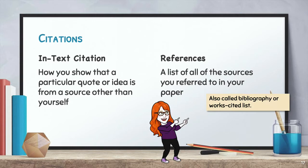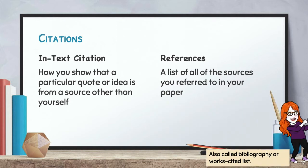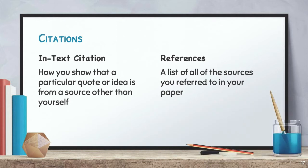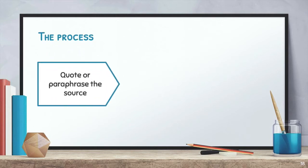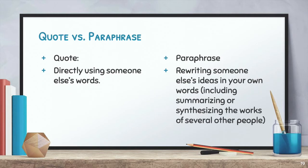A reference list is also called a bibliography or a works cited list. Usually it will have information like an author's last name and page number, but how you write the citation depends on how you introduce the information and where you got it. Your process will go something like this: you'll start by quoting or paraphrasing the source. With a quote, you are directly using someone else's words and you will have it inside quotation marks. A paraphrase is when you rewrite someone else's ideas in your own words, including summarizing or synthesizing the works of several other people.